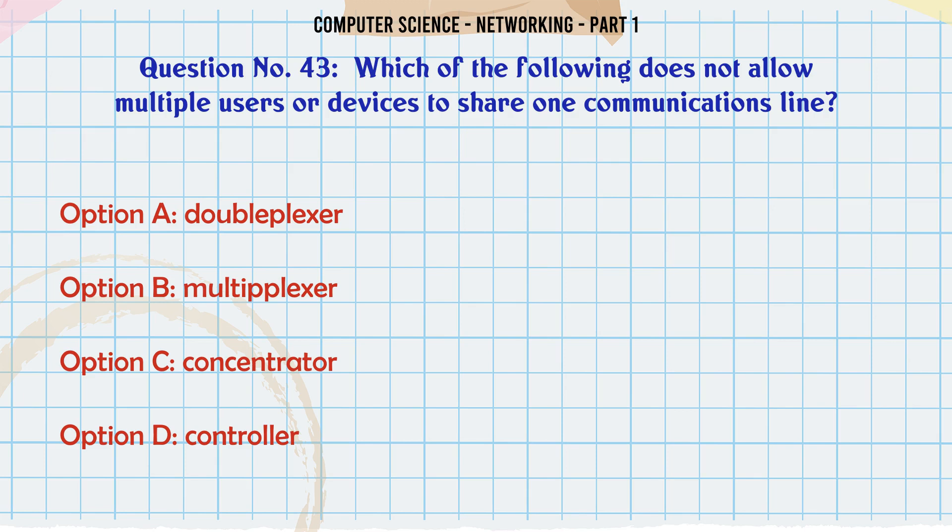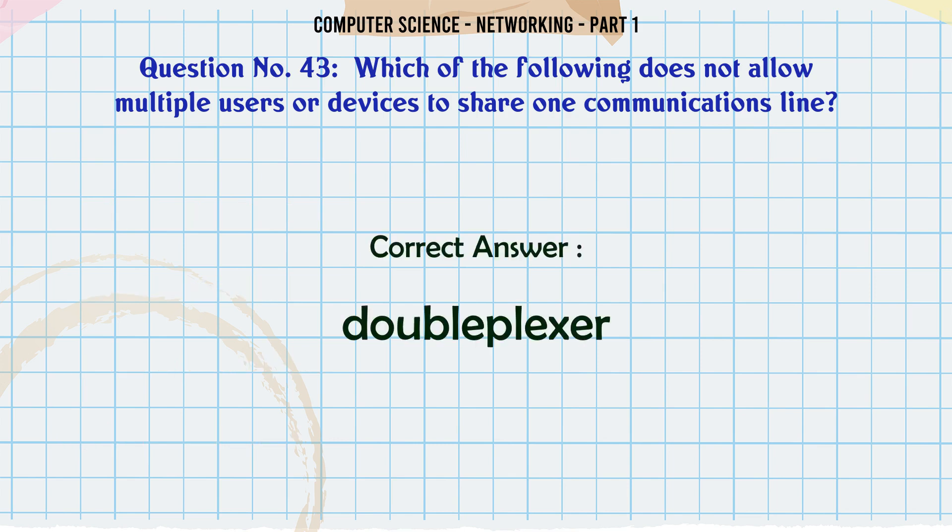Which of the following does not allow multiple users or devices to share one communications line? A. Doubleplexer. B. Multiplexer. C. Concentrator. D. Controller. The correct answer is: Doubleplexer.